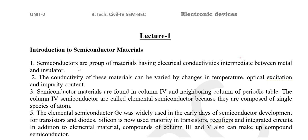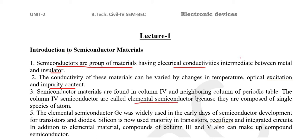What is a semiconductor? Semiconductors are a group of materials which have electrical conductivities in between metal and insulator. The conductivity of these materials can also be changed by varying the temperature, optical excitation, and the impurity content. These semiconductor materials are found in column 4 and the neighboring columns of the periodic table. These are termed as elemental semiconductors because they are composed of a single species of atom.